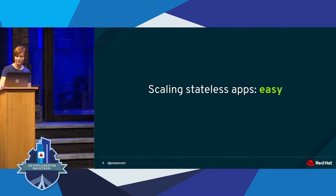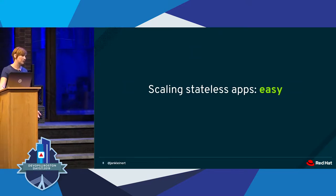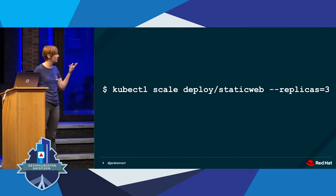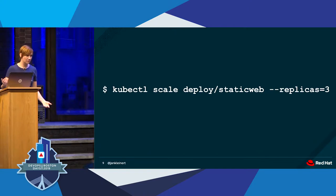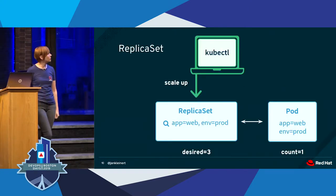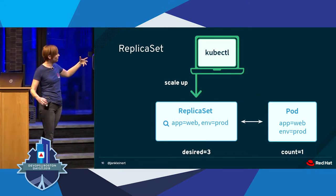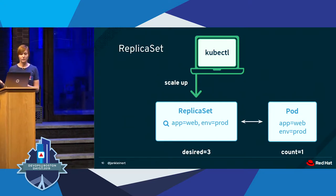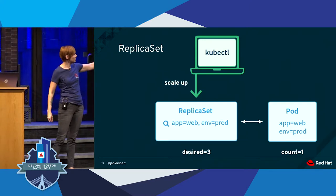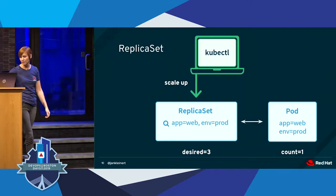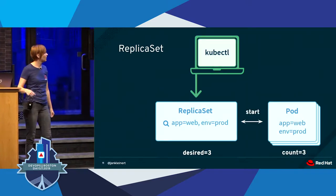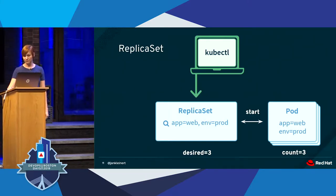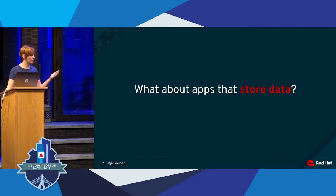Why should you care about operators in the first place? Scaling stateless applications on Kubernetes is actually pretty easy. There are built-in types like replica set that do a lot of this for you. You can run a command like kubectl scale, tell it what you want to scale and how many replicas you want, and it'll take care of that. Kubernetes is very declarative—you've got your desired state and your actual state, and it will do whatever needs to be done to bring actual state in line with desired state.